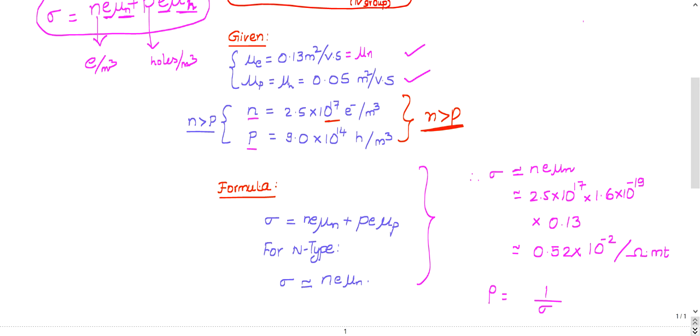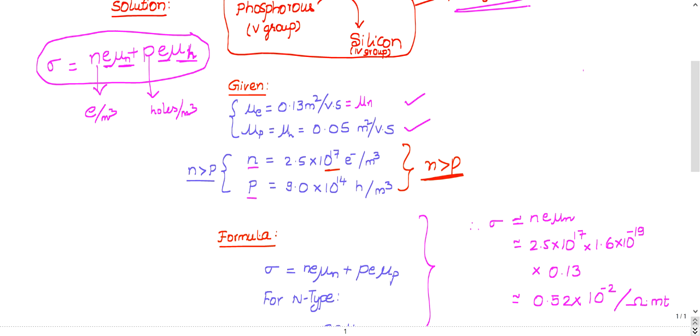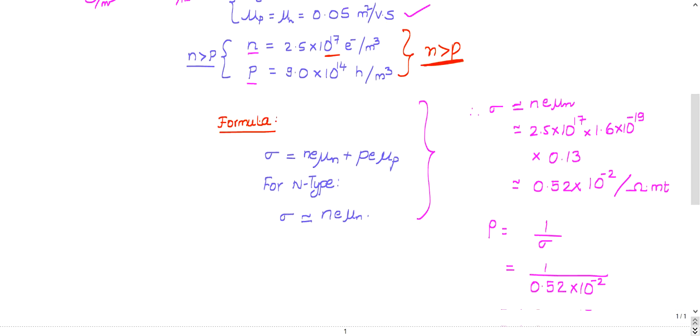Whenever n is greater than p or it's an n-type material, you can neglect the p part in the conductivity formula. For n-type material, you can neglect the second term; for p-type material, you can neglect the first part.